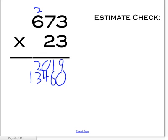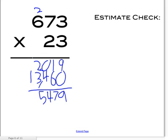So then you have 2,019 and 13,460. Then you add: 0 plus 9 equals 9, 6 plus 1 equals 7, 4 plus 0 equals 4, and 2 plus 3 equals 5, and just put the 1 down here. So you get 15,479 as your answer.